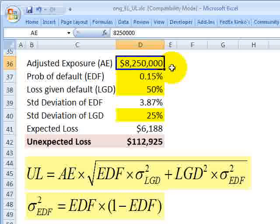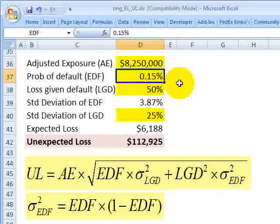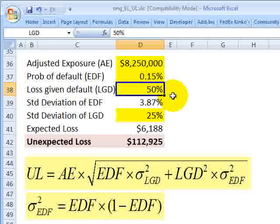We need several inputs. I'm using Michael Ong's example. So the adjusted exposure is $8.25 million. We need a probability of default or expected default frequency. I'll assume 0.15%. We need a loss given default. I'll assume 50%.